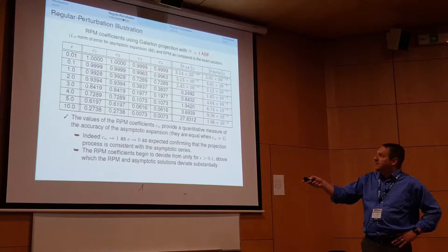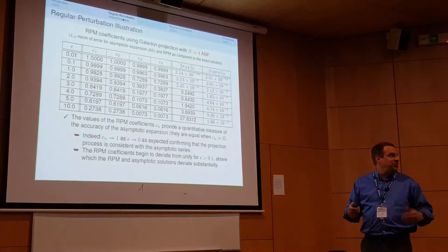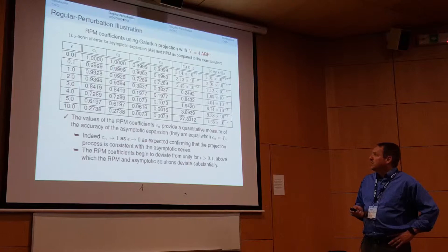That's quite impressive. As epsilon goes to zero, the coefficients approach one as expected, confirming that the Galerkin projection process is consistent.